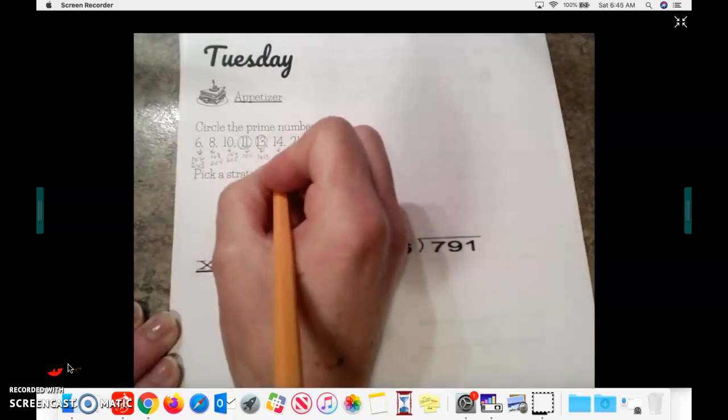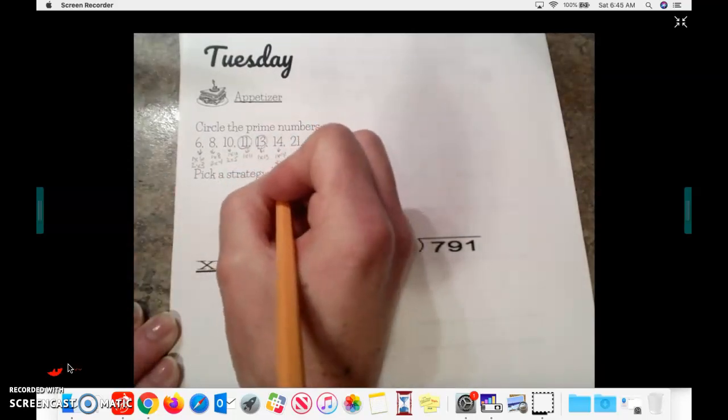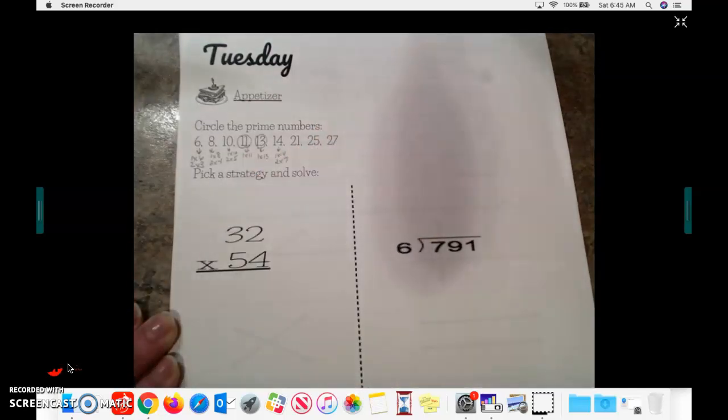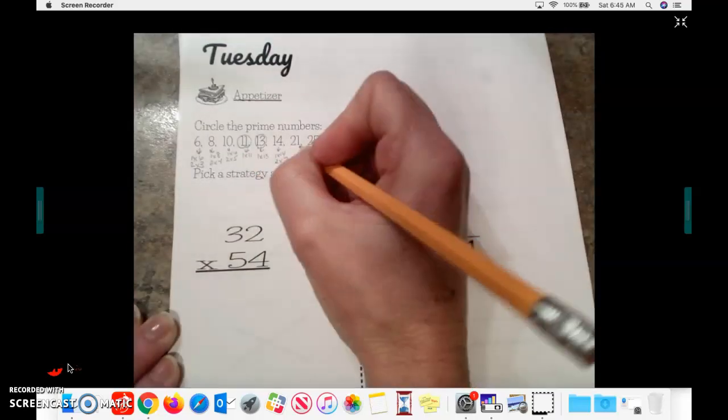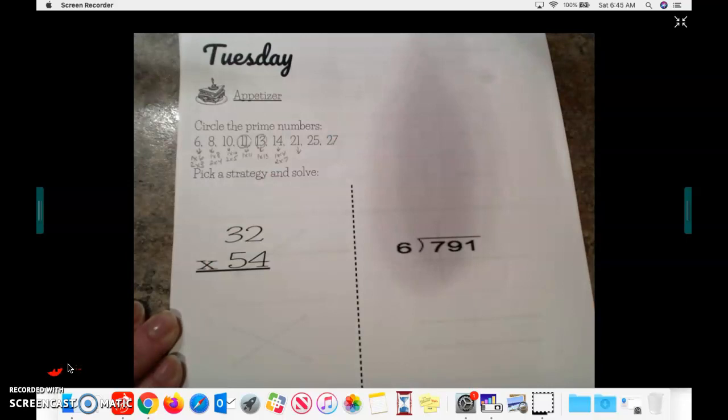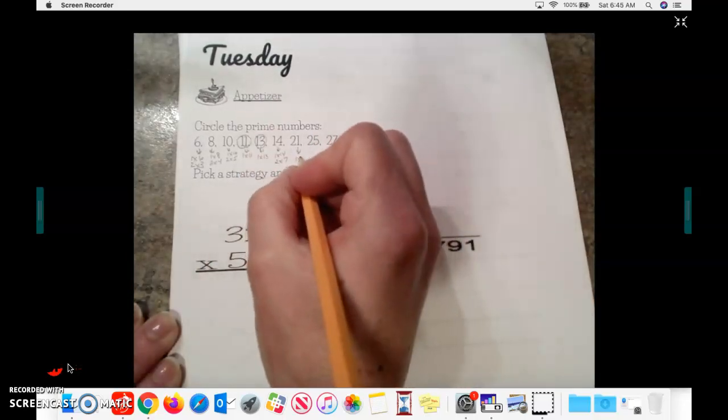14, 1 times 14, and 2 times 7. It is not a prime number. We had 21 on yesterday's appetizer, and we know that its factors are 1 times 21 and 3 times 7. So it is not a prime number.